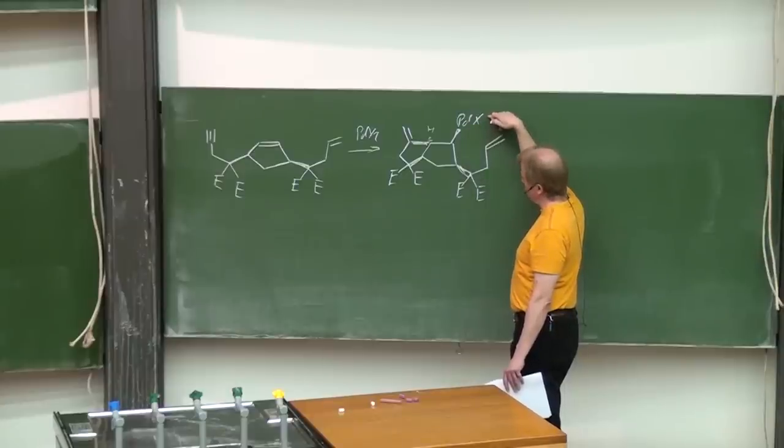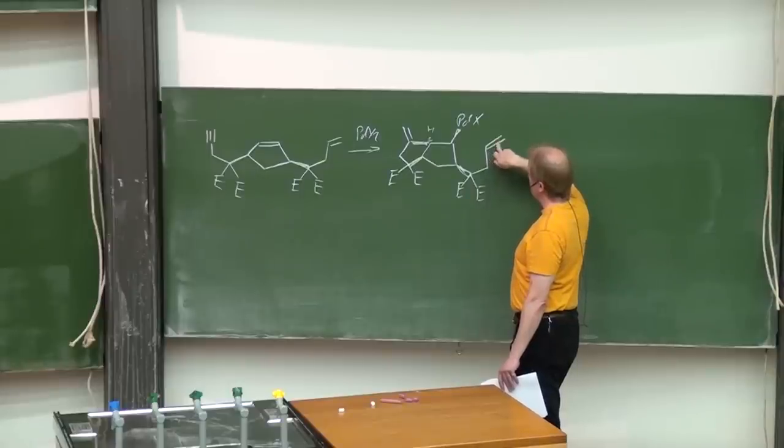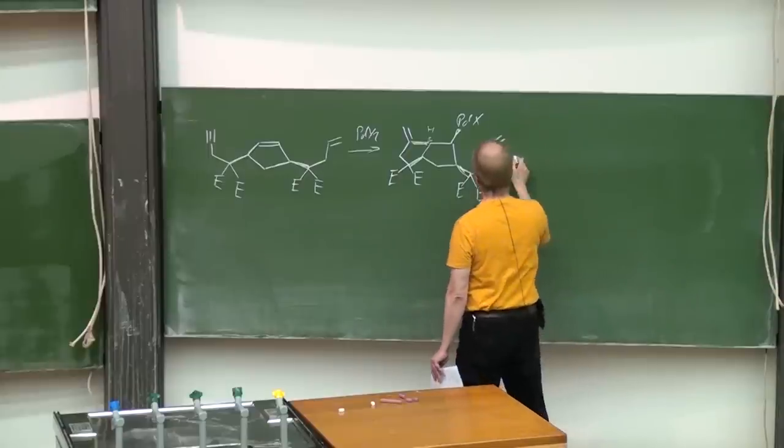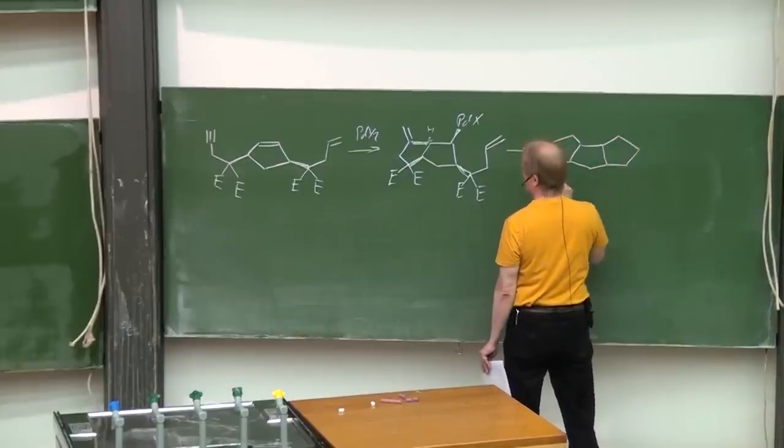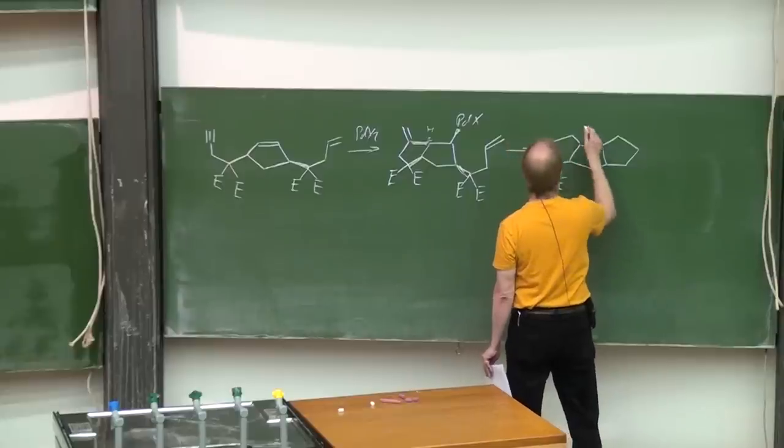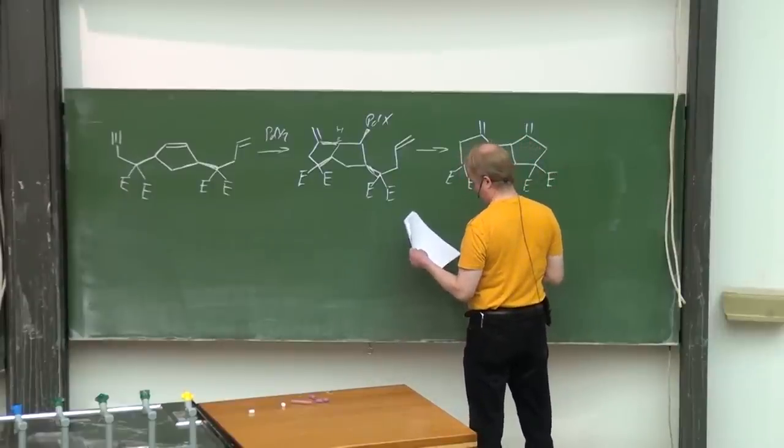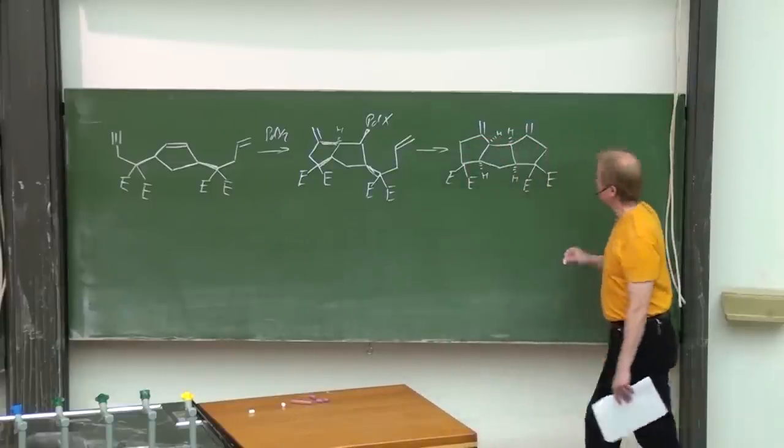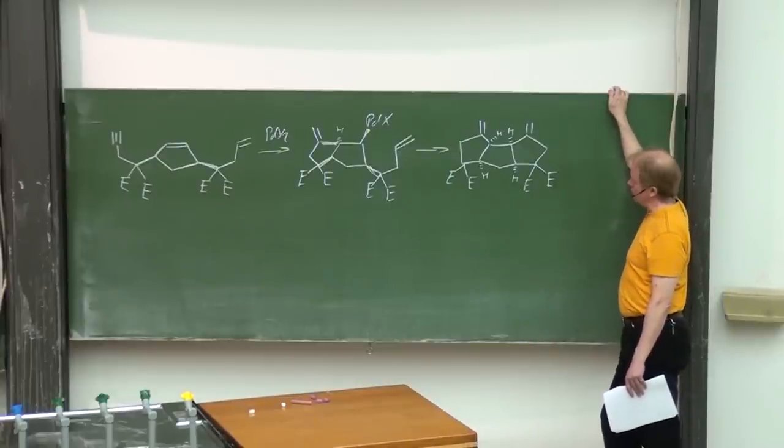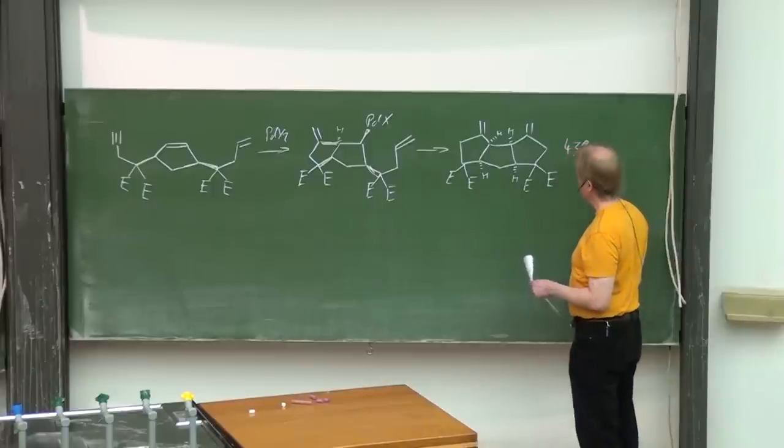Therefore there's no choice but undergoing a carbopalladation of that terminal olefin, then beta-hydride elimination will lead us to this strange compound with three annelated five-membered rings and two exocyclic double bonds, isolated with 43% yield.